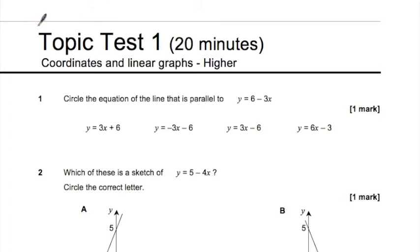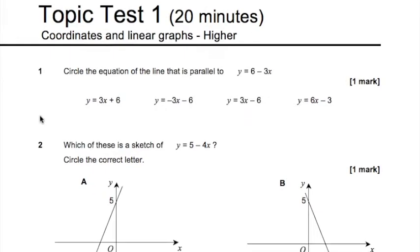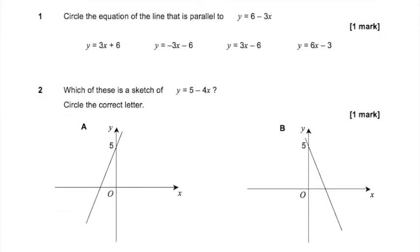So I'm going to be going through another topic test, this is coordinates and linear graphs. Right, so first question, circle the equation of the line that's parallel to y equals 6 minus 3x. Okay, so if it's parallel to this line, we need to look for one that's got the same gradient, and we've just got to be careful, they're trying to trick us. So we know this is a straight line in the form y equals mx plus c, and they've just flipped round the mx and the c. So we see the number before the x is minus 3, and the only one of these which has a minus 3x is this one here.